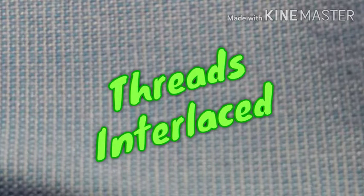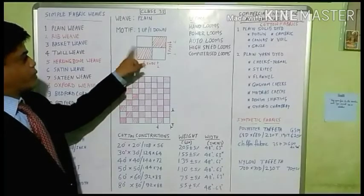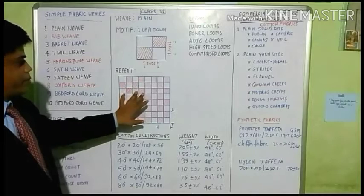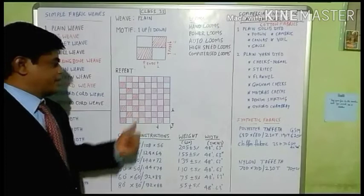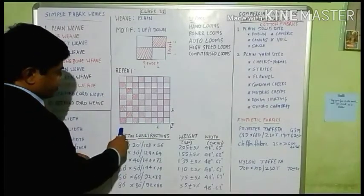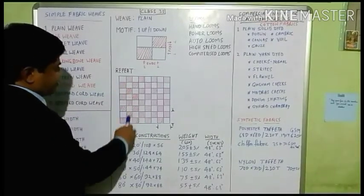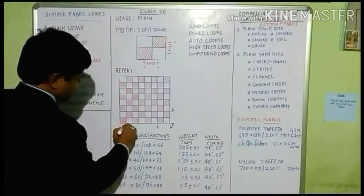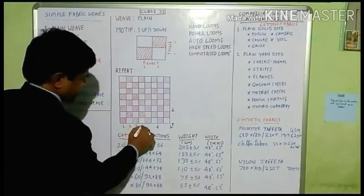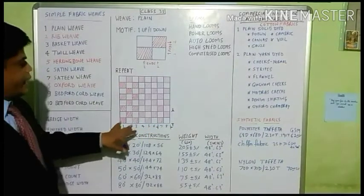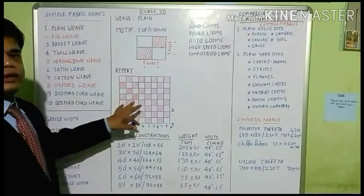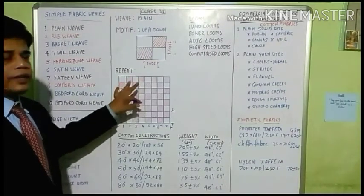This image shows the interlacement of warp and weft yarns. This is the motif — this is the fabric. To any type of fabric you take, it appears like this. These lines are the warp threads. There are 8 ends — lengthwise yarns, that is warp ends. These are the 8 warp ends in the diagram.